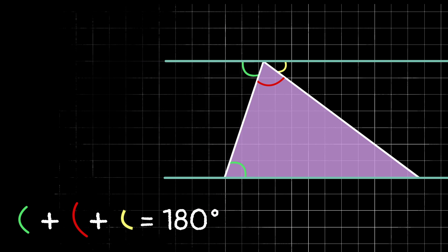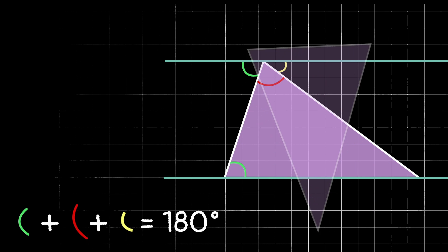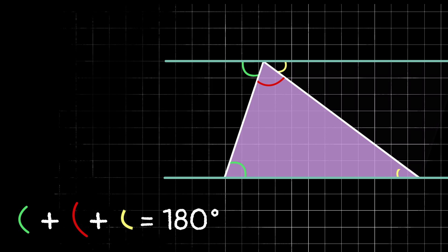Same thing on the other side using alternate interior angles. We know that the bottom right angle of our triangle has the same measurement as the yellow angle, so I can go ahead and label it as yellow.